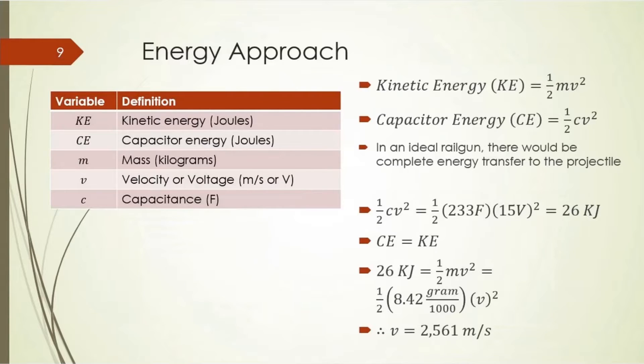I started looking at the various theories. The first one is the most simplistic, the energy theory. The energy of the capacitor is 1/2 CV^2, C being capacitance and V being voltage. The supercapacitor I ordered at 233 farads at 15 volts would offer an energy of 26,000 joules. If all that energy would be transferred to the projectile, it would relate to approximately 2,600 meters per second with an 8 gram projectile. Extremely fast.